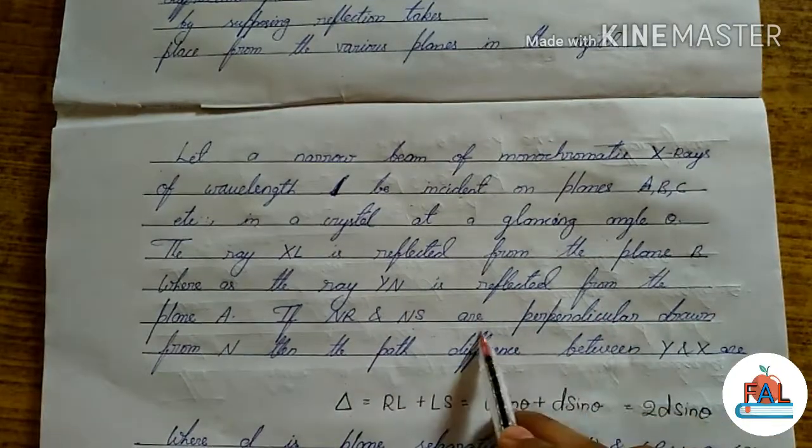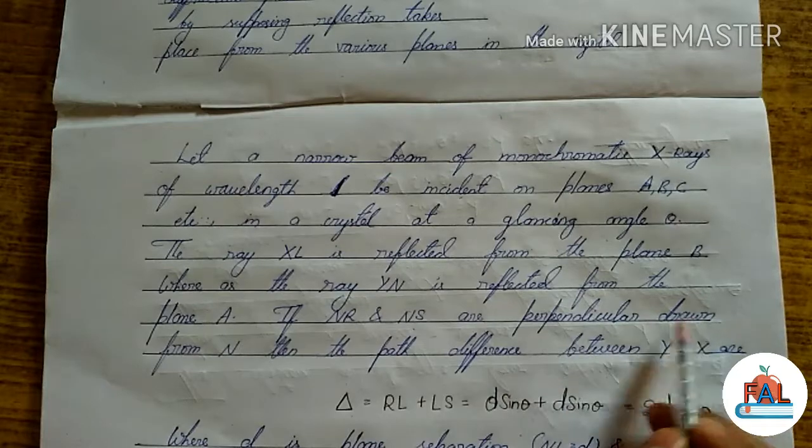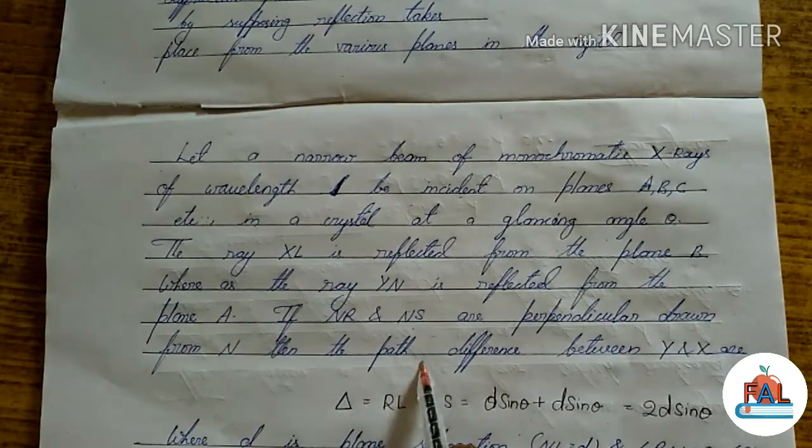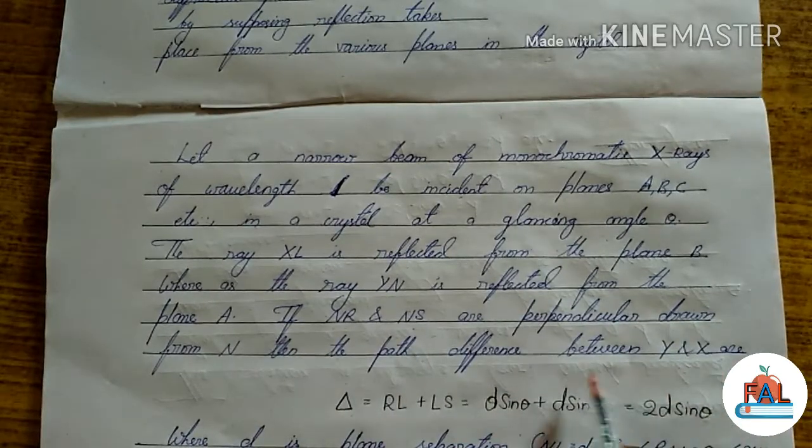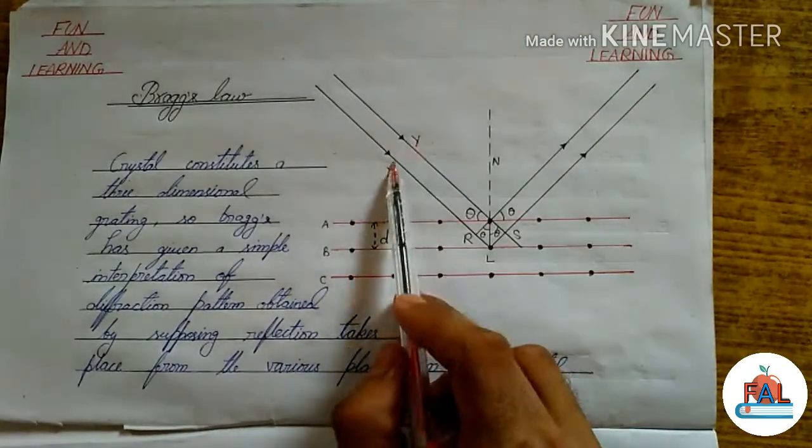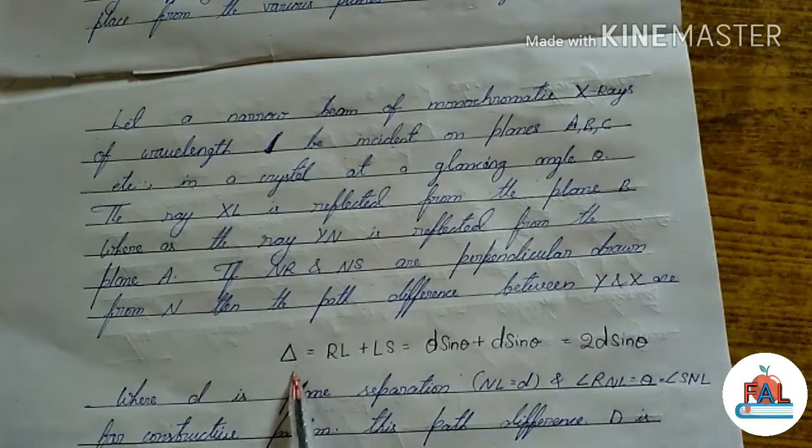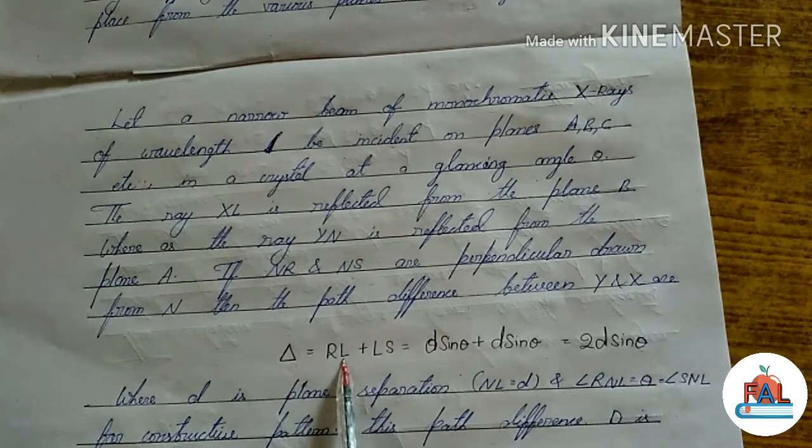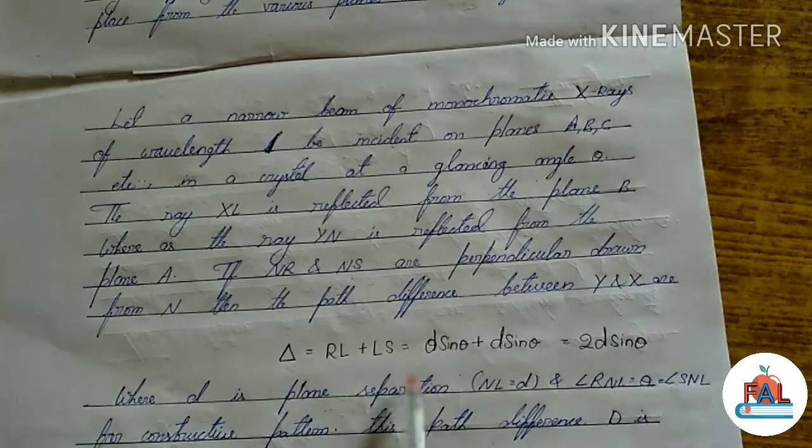If N-S and N-R are perpendiculars drawn from N, then the path difference between Y and X will be RL plus LS. What is the value of RL?